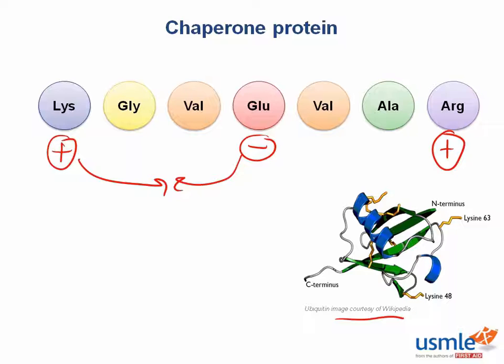Here's a question for you: if you have a protein floating around in the cytoplasm of a cell, do you think the polar amino acids like to be on the outside of the protein, or buried in its core? Well, the polar ones like to be around water, so they'll be on the outside.